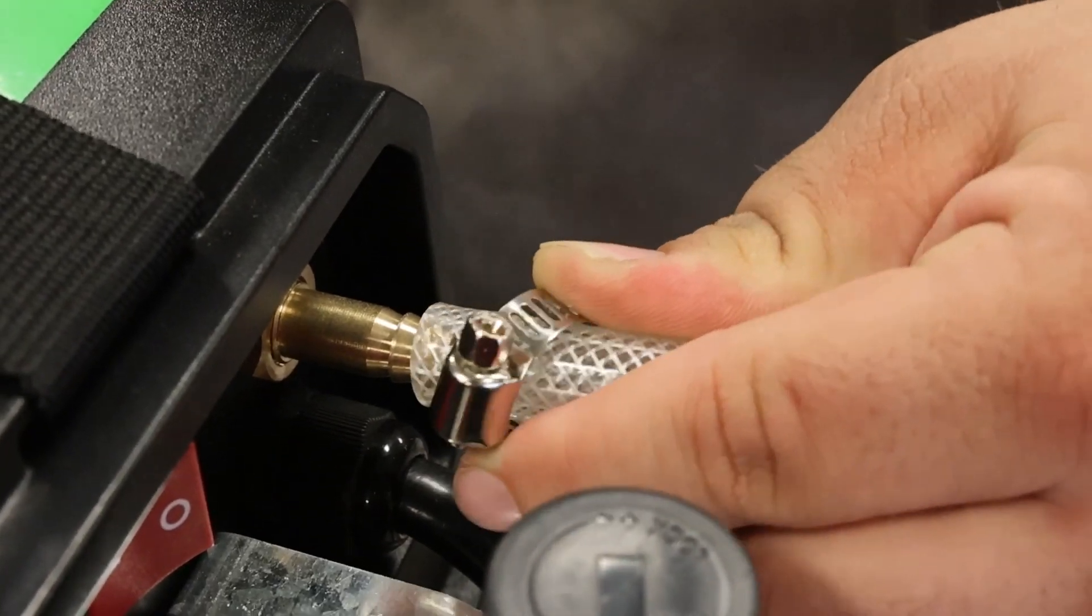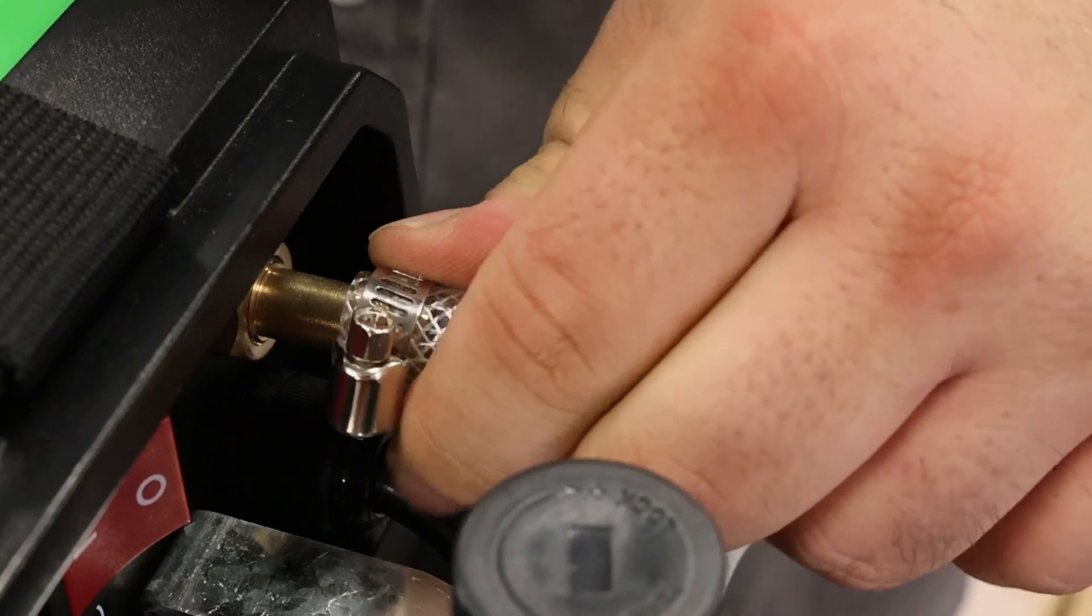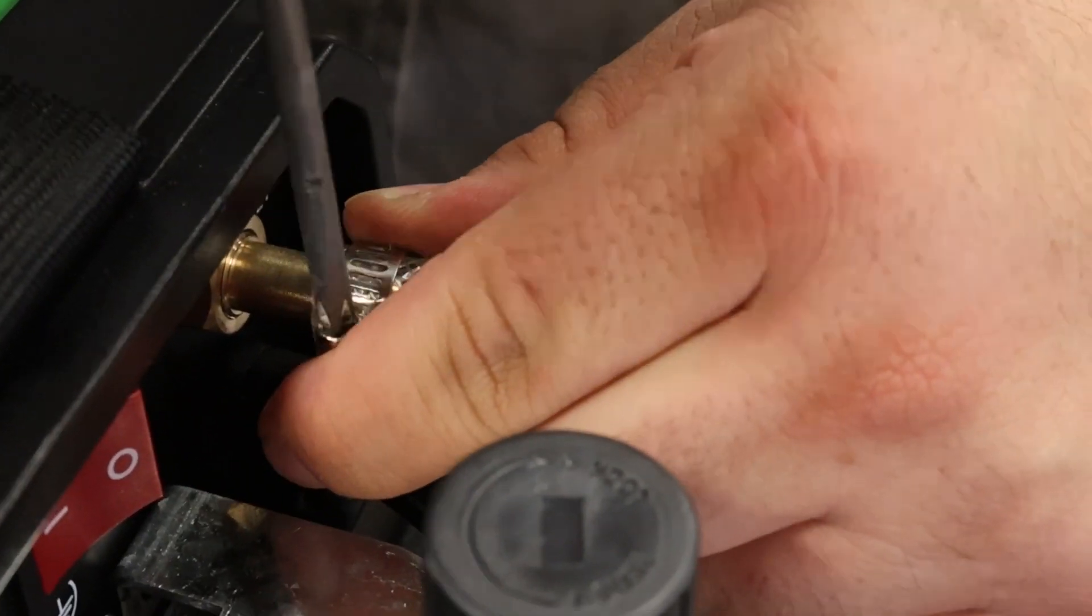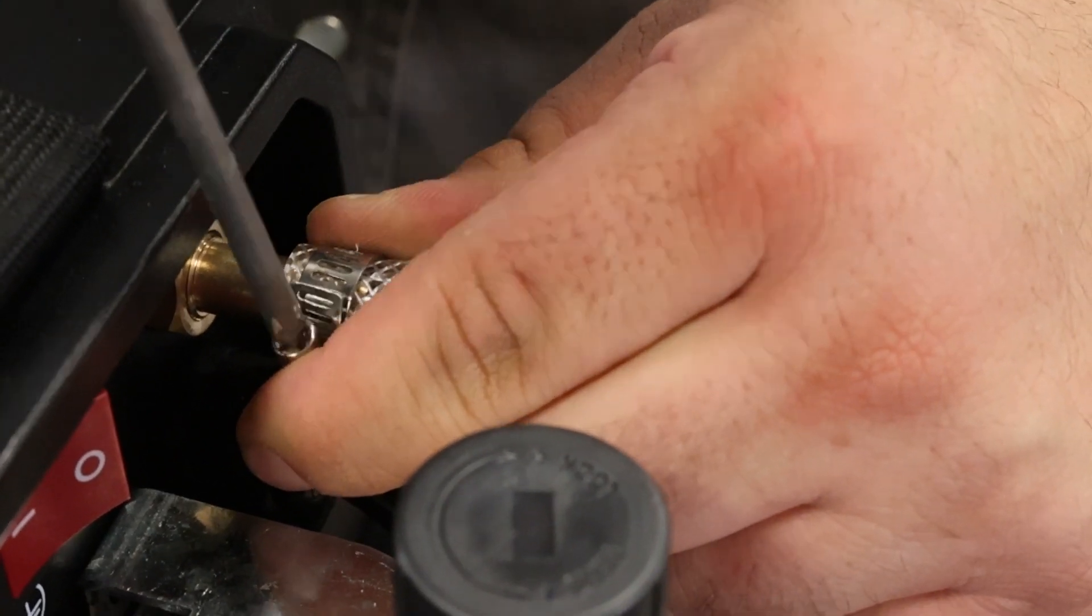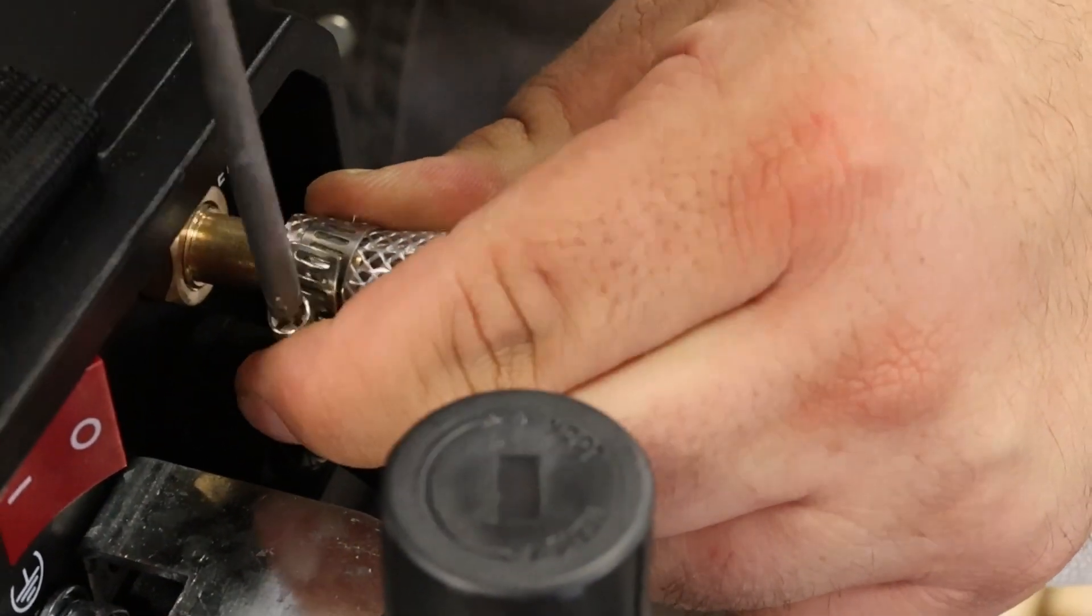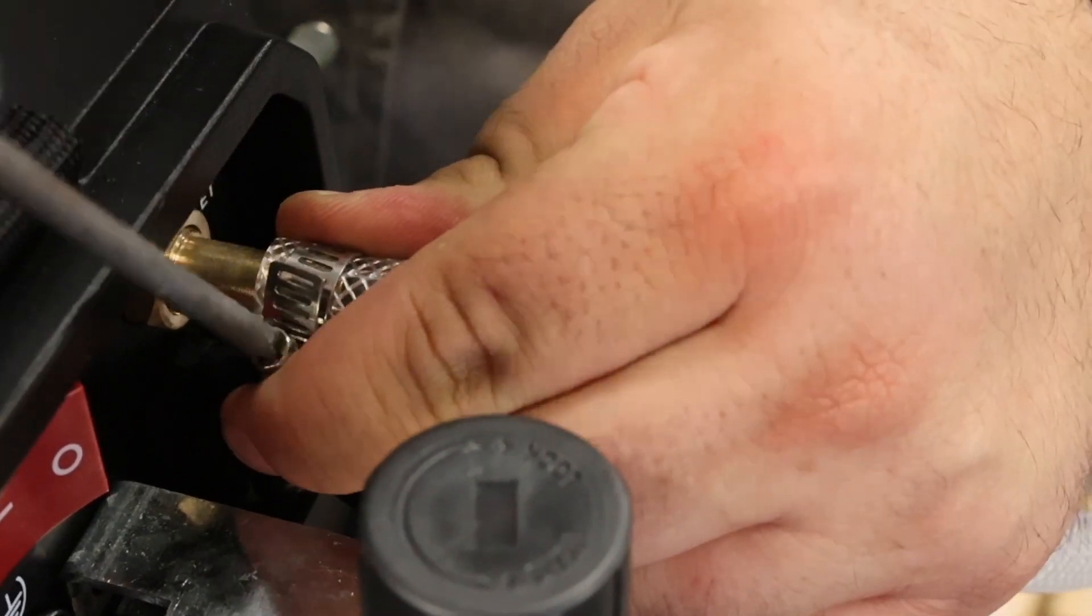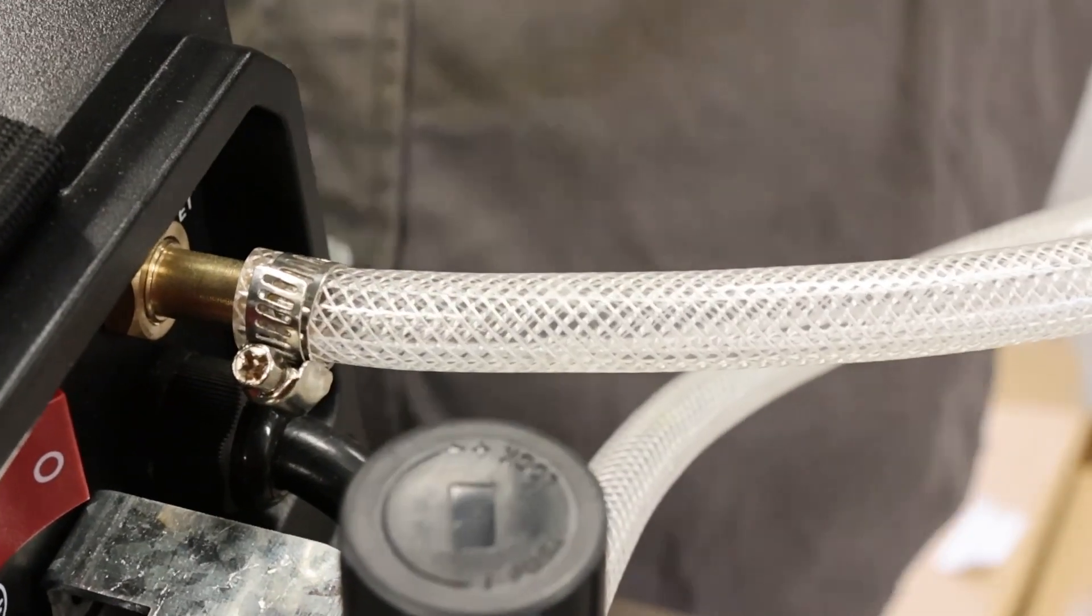Now that the regulator's mounted, I'm going to push the airline on the back onto the barb fitting on the backside and I'm going to use my screwdriver to tighten up the hose clamp that was provided in the consumable kit. Once this is done and everything's tight and in good working order, I'm going to hit it with a shop air.